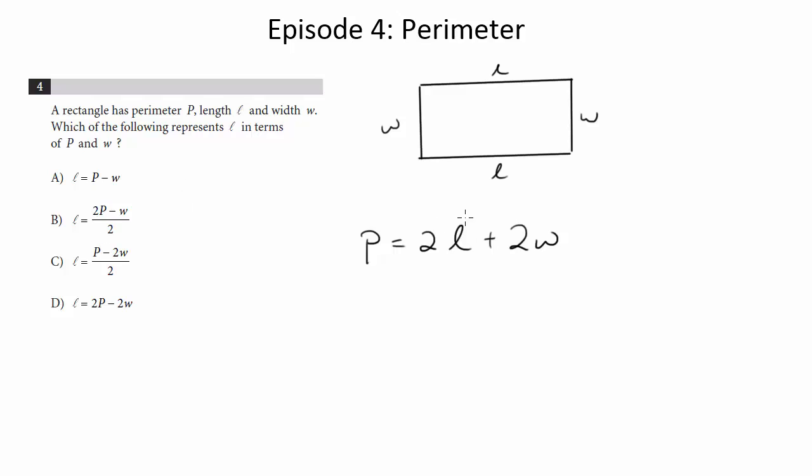And now we just need to rearrange to get this as l equals. So let's subtract 2w from both sides. We're going to get 2l is equal to p minus 2w. Divide both sides by two, and we get the final answer, which is p minus 2w over two. And indeed, we see that in choice c. And that's it.